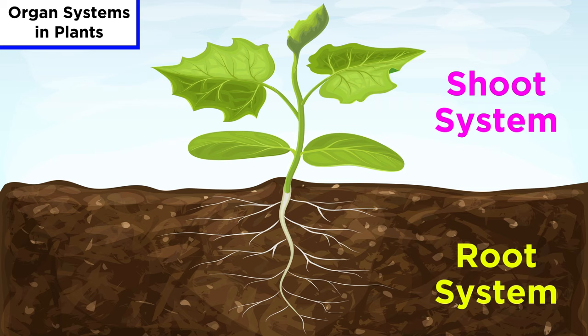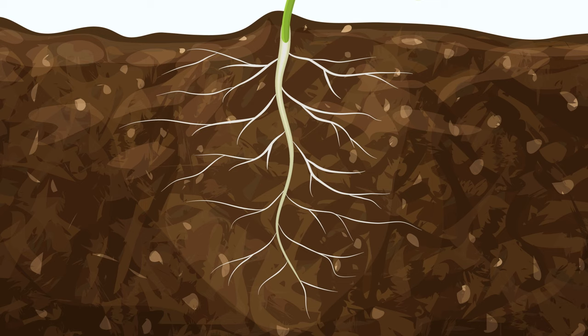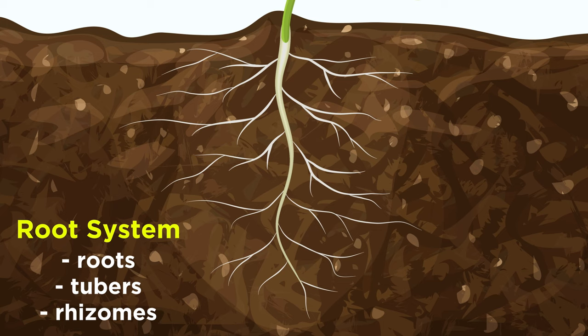In plants, especially vascular plants, there are two organ systems: the root system and the shoot system. The root system includes all of the parts of a plant that grow below the ground. These include roots, tubers, and rhizomes.